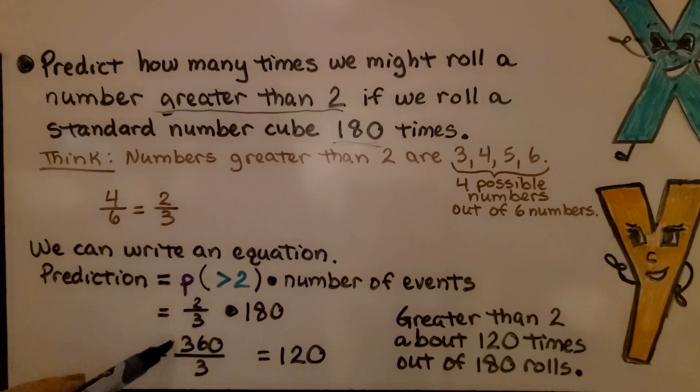2 times 180 is 360. We have 360 thirds. 360 divided by 3 is 120. So, greater than 2? About 120 times out of 180 rolls.